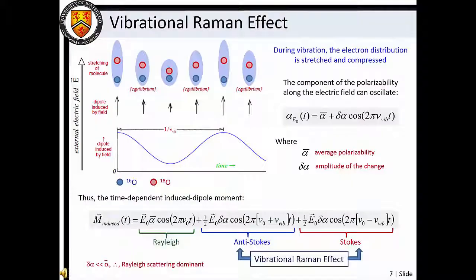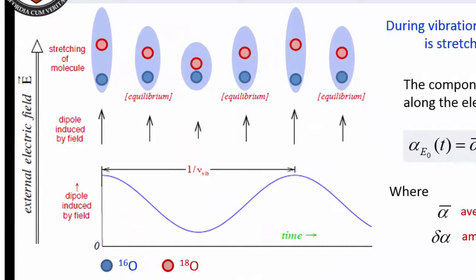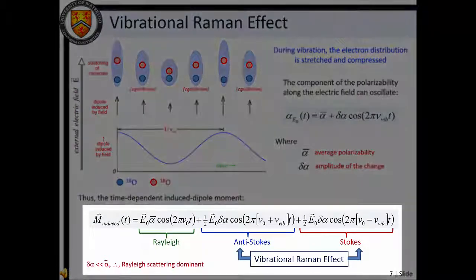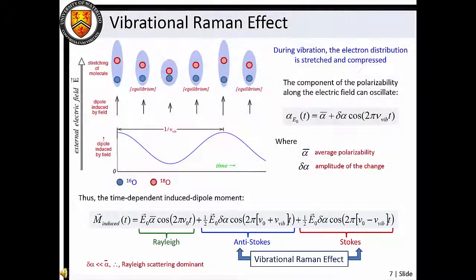The vibrational Raman effect is analogous to the rotational Raman effect. In this case, the molecular electron distribution is stretched and compressed during vibration, so the component of the molecular polarizability along the electric field can oscillate. Thus, the oscillating induced dipole moment has components at the incident light frequency and at the molecular vibration sum and difference frequencies. Again, because the average molecular polarizability is larger than the polarizability change induced by vibration, the Rayleigh scattering term is dominant.